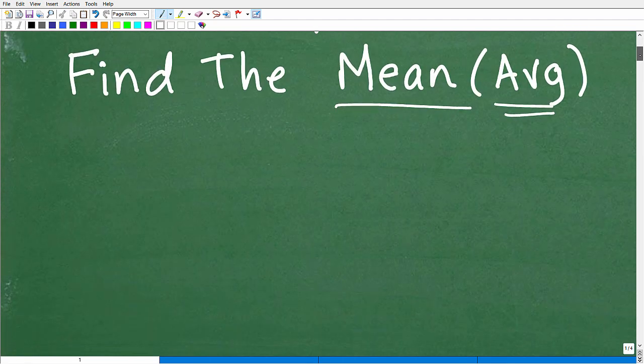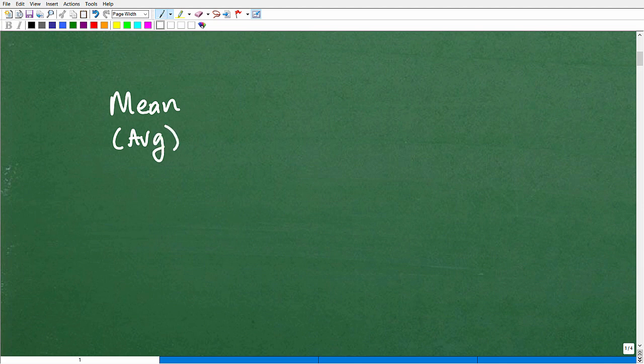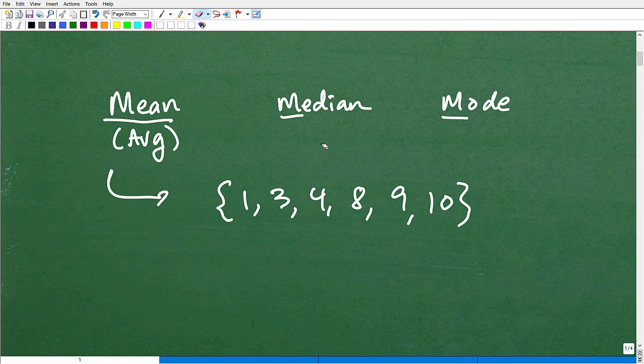Now let's get into the mean. The mean kind of goes along with these other topics. We have the mean, which is basically just the average, and the median and the mode. You can see each one of these start with M, and it's easy to get these confused. So we've got some data. If I say find the median, oftentimes students, if they don't really know this well, they'll find the mean. Or if I say find the mean, then they'll find the median.